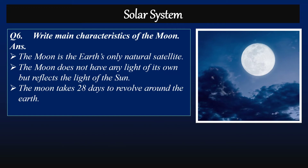Question six: Write the main characteristics of the moon. Answer: One, the moon is the earth's only natural satellite. Two, the moon does not have any light of its own but reflects the light of the sun. Three, the moon takes 28 days to revolve around the earth.